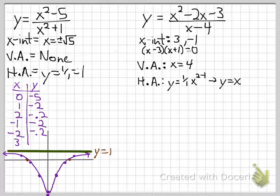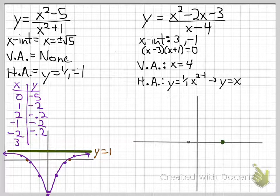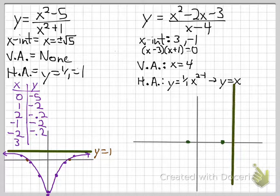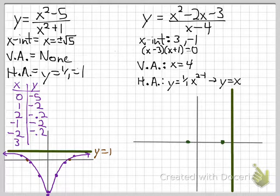The graph will follow the y equals x end behavior, coming up from the negative and exiting on the positive. We draw axes with x-intercepts at positive 3 and negative 1, and a vertical asymptote at x equals 4. We'll pick x values of 0, 1, 2, negative 2, and then 5 and 6 to get an idea of the behavior on both sides.